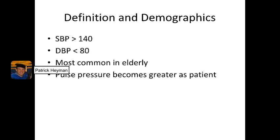Isolated systolic hypertension is defined as systolic blood pressure above 140 and diastolic pressure below 80. As long as the diastolic pressure stays below 80 and the systolic pressure is going up, that's going to result in an increased pulse pressure. And usually, as the patient gets older, the pulse pressure is going to continue to increase.